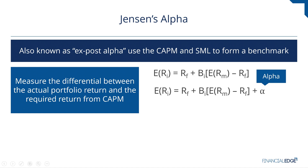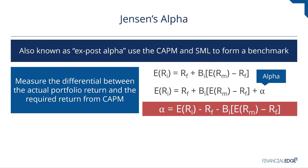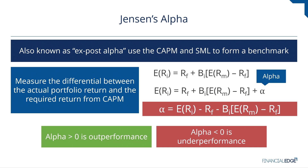With some simple algebra, we can rearrange the formula to solve for alpha: alpha equals the expected return on the portfolio minus the risk-free rate minus beta times the equity market risk premium. We interpret Jensen's alpha the same way — if that calculation is greater than zero, it indicates outperformance for the level of risk taken on; if alpha is less than zero, it indicates underperformance, meaning the manager produced less return than the amount of risk in the portfolio would dictate.